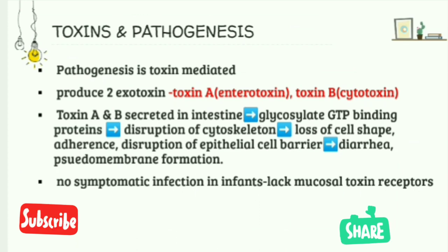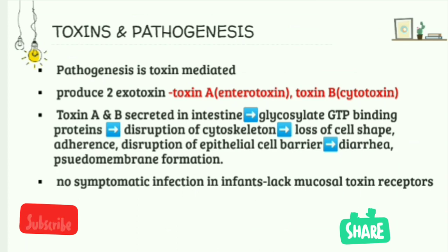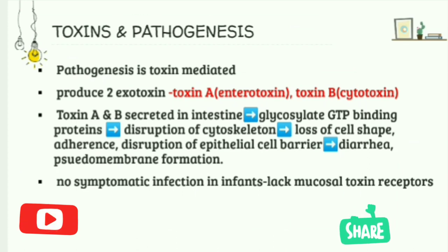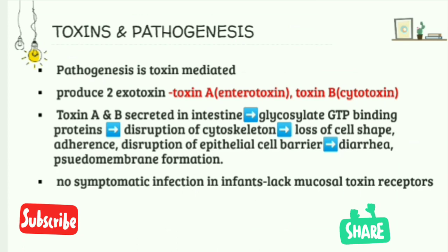These toxins glycosylate the GTP-binding proteins in the intestine. As a result, the cytoskeleton gets disrupted, because GTP-binding proteins regulate the cellular actin cytoskeleton. This disruption causes the cell to lose its shape and adherence, leading to disruption of epithelial cell barriers, resulting in diarrhea and pseudomembrane formation.